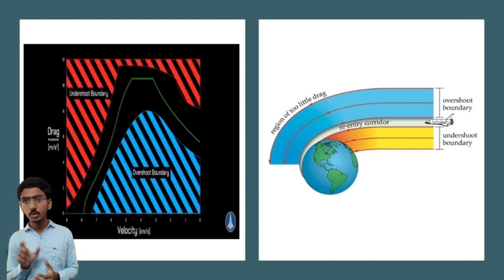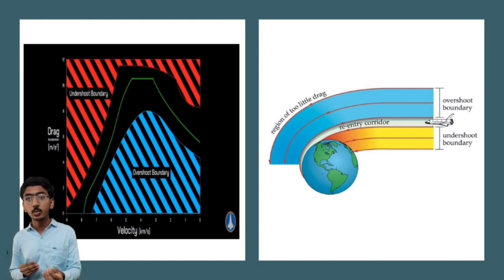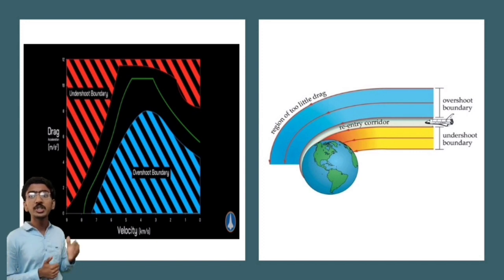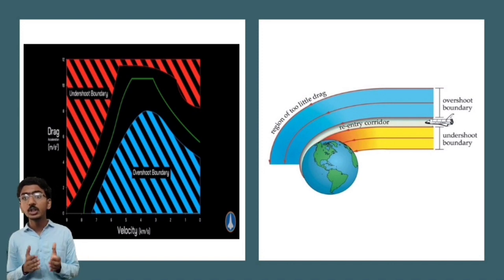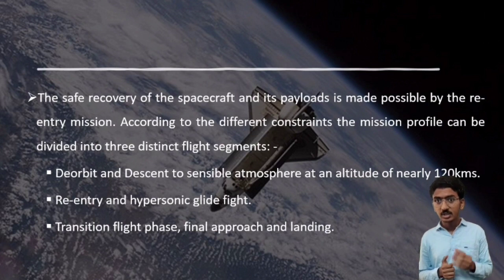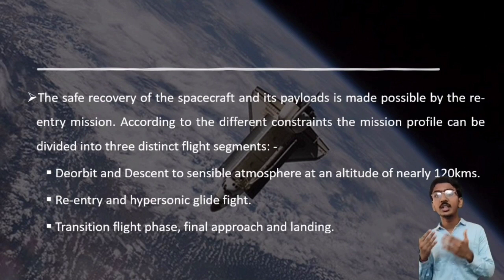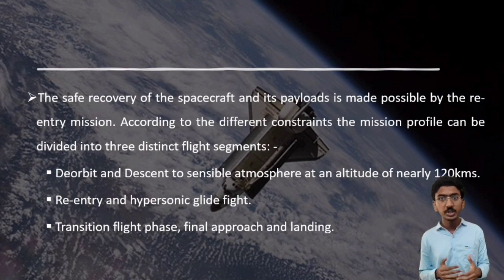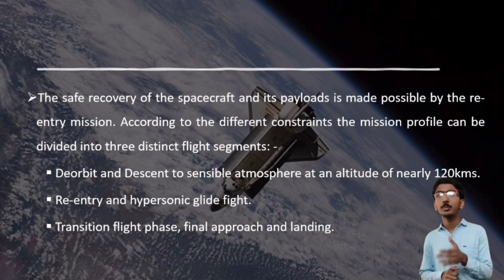The overshoot boundary would not destroy the orbiter but could potentially cause it to skip back out of the atmosphere. The undershoot boundary in red involves generating too much drag — this is a hard boundary because crossing it will cause damage to the orbiter by exceeding structural and thermal limits. The reentry mission profile can be divided into three distinct flight segments: deorbit and descent to the sensible atmosphere at an altitude of nearly 120 km; reentry and hypersonic flight; and transition flight phase, final approach, and landing.